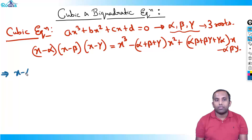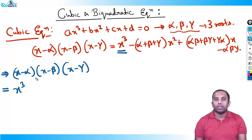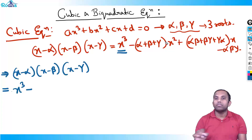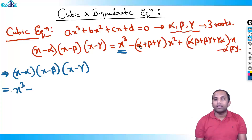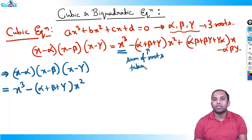Let me explain how to write this carefully — understanding this is key to solving any cubic equation question. The first term is x·x·x = x³, followed by a minus sign. Then the power reduces by one to x². The coefficient of x² is α+β+γ, called the sum of roots taken one at a time.